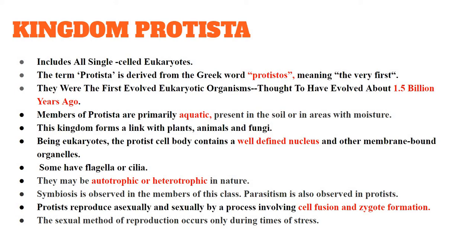They possess a true nucleus with proper nuclear membrane. The term Protista is derived from the Greek word 'protestos', meaning 'the very first', because these organisms are considered as the first evolved eukaryotic organisms. Studies show that they evolved almost 1.5 billion years ago.